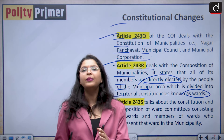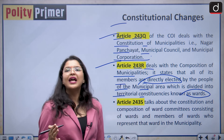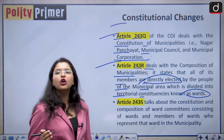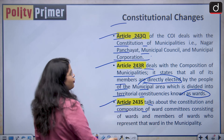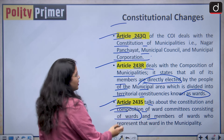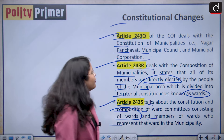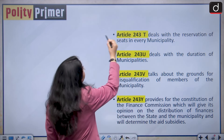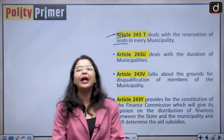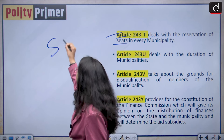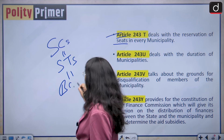Always remember that elections are conducted by the state election commission for Panchayats as well as municipal corporations or councils. Article 243-S talks about the constitution and composition of ward committees, consisting of wards and members of wards who represent that ward in the municipalities. Article 243-T deals with the reservation of seats in every municipality. The seats are reserved for the SC communities, ST communities, backward classes, and women.